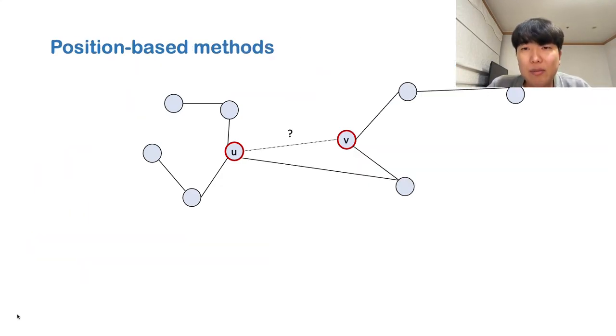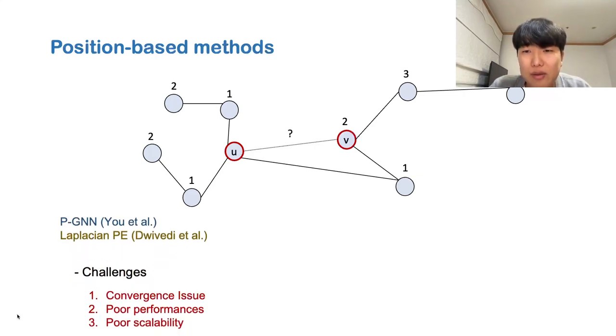Position-based methods have been proposed for link prediction. They are good because isomorphic nodes can be distinguished by their position. The position of a node can be defined as its distances relative to other nodes. However, it is not practical to compute all the distances between nodes. A number of methods were proposed for efficient representation of positional information, but they suffer from convergence issues, poor performances, and poor scalability.